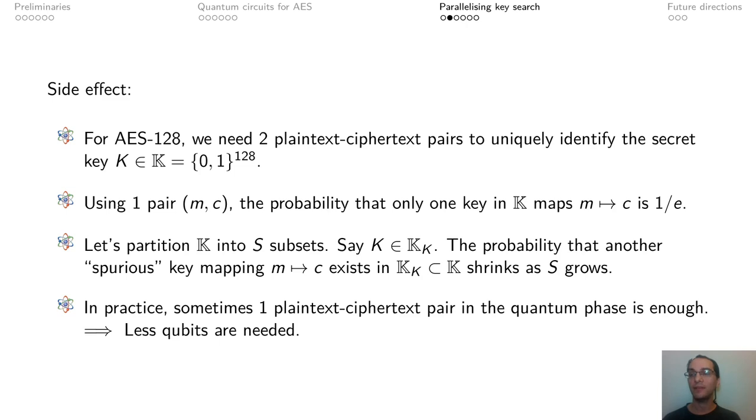Also, a side effect of inner parallelization is that since we are looking for a key in a smaller subset of the key space, it's unlikely that other spurious keys mapping the same plaintext to ciphertext would be present in the same subset. This means that we can afford running the quantum part of the attack using less plaintext ciphertext pairs. This results in less qubits being required.